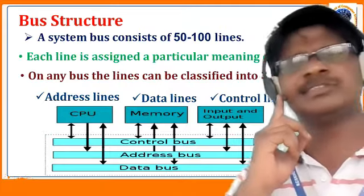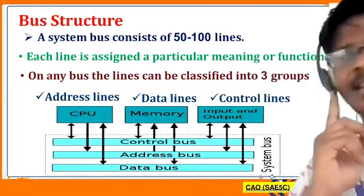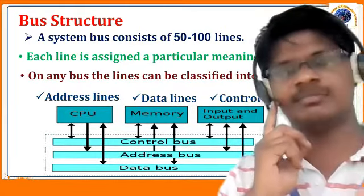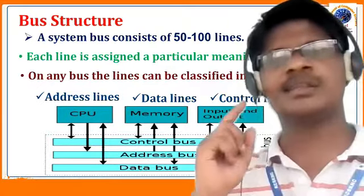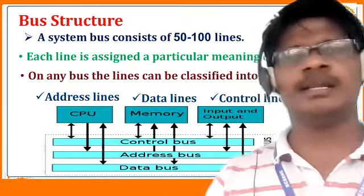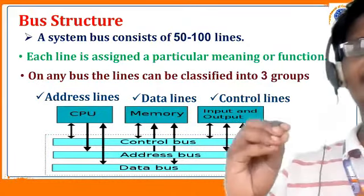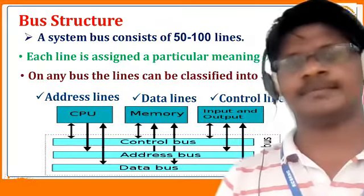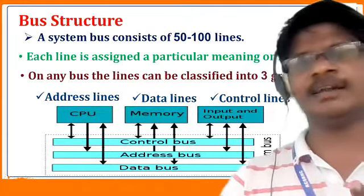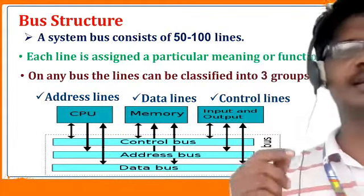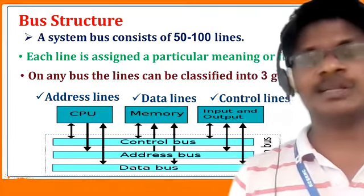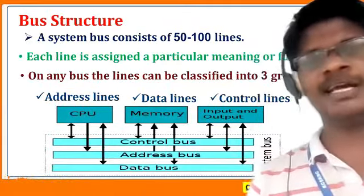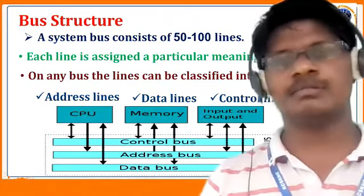A system bus consists of at least 50 to 100 lines, and each line is assigned a particular meaning or function. On any bus, the lines can be classified into three groups: the address bus, the data bus, and the control bus. In the upcoming slides we will see what is the address bus, what is the data bus, and what is the control bus.